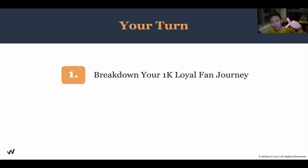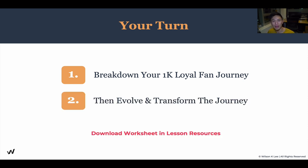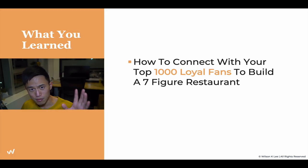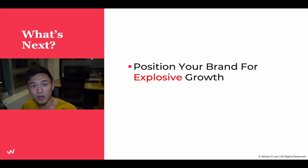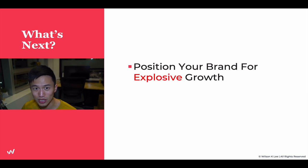Now it's your turn. Go to the resources below, download the worksheet, and start breaking down your 1k loyal fan journey, then evolve and transform it to attract that 1,000 loyal fan base so you're on your road to a seven-figure business. The resource is in the link below for you to download and follow along. In this lesson, we covered how to execute and implement the 1k journey for loyal fans. In the next module, we're going to be talking about positioning — how to position your brand and restaurant for explosive growth — and marketing strategies. See you in the next lesson.